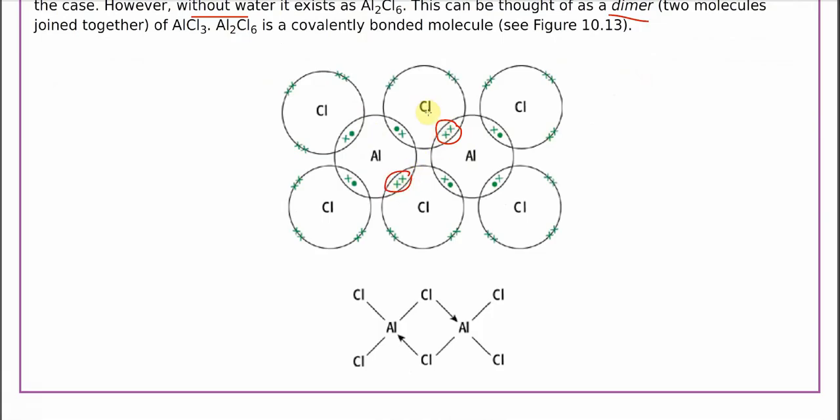The pair of electrons formed. This chlorine will donate this pair of electrons to another aluminum. So it will form two dative bonds here, and the arrow will point to the aluminum.